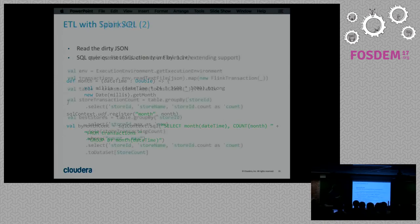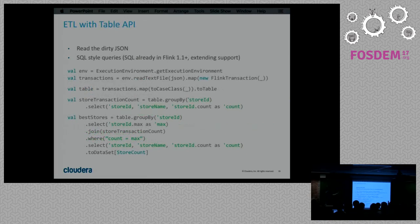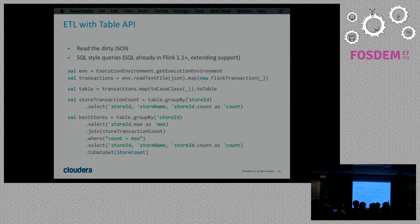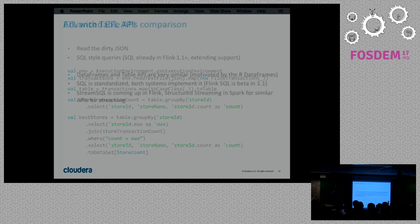Now the table or data frames API in Flink. Both systems actually have both, we just don't have time to visit everything. This is very close to SQL but still Scala, so the statements you write are table.groupBy, select, join, and where — but you're still in Scala and still have type information. If you want to go back to standard Flink or Spark, it's much easier. And here I accomplished the same: select the most important stores.